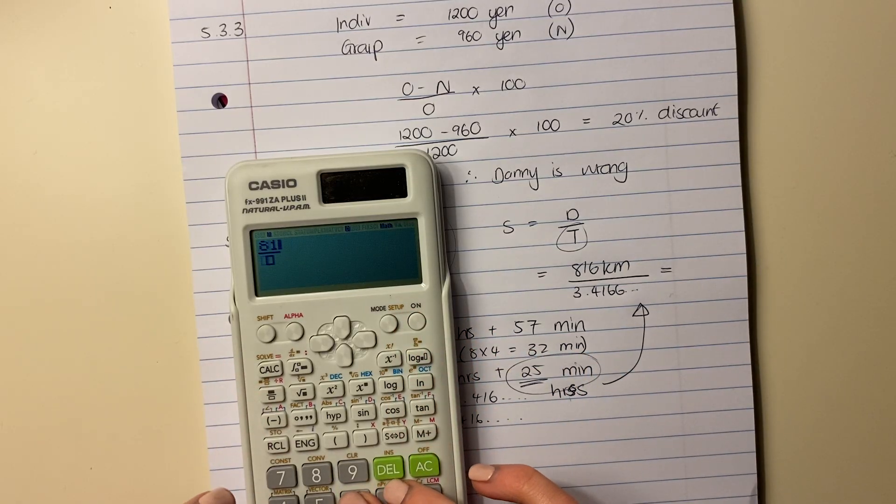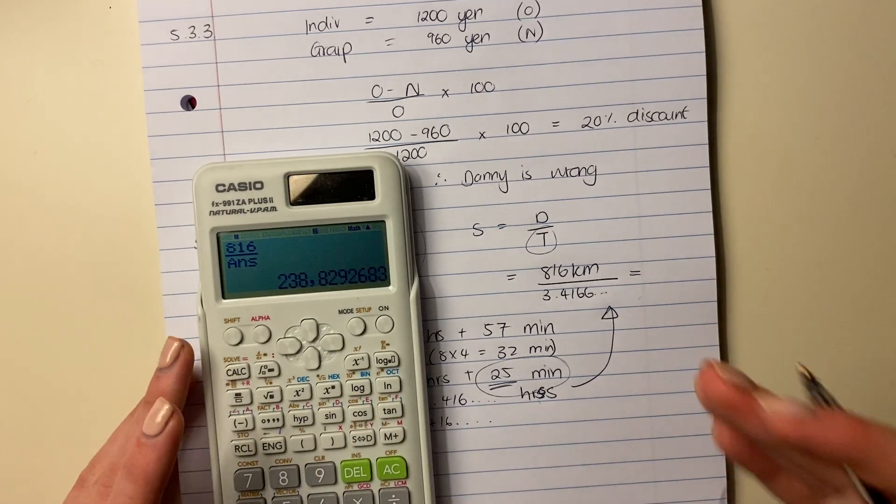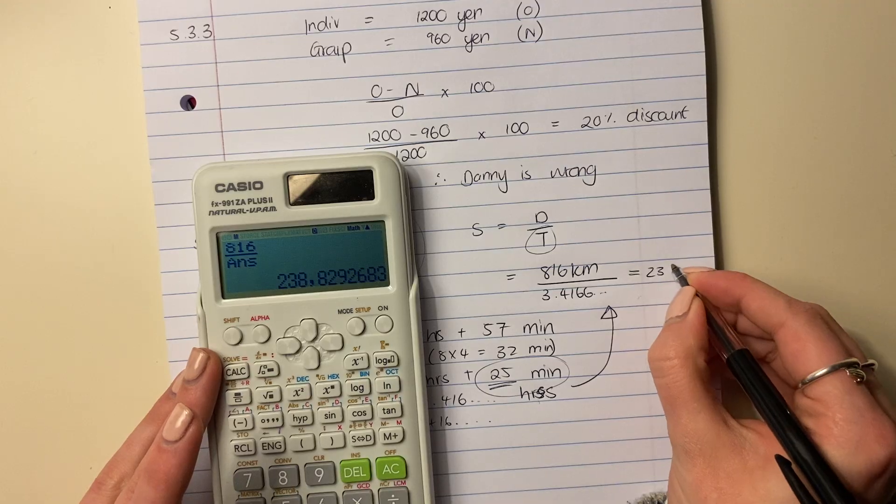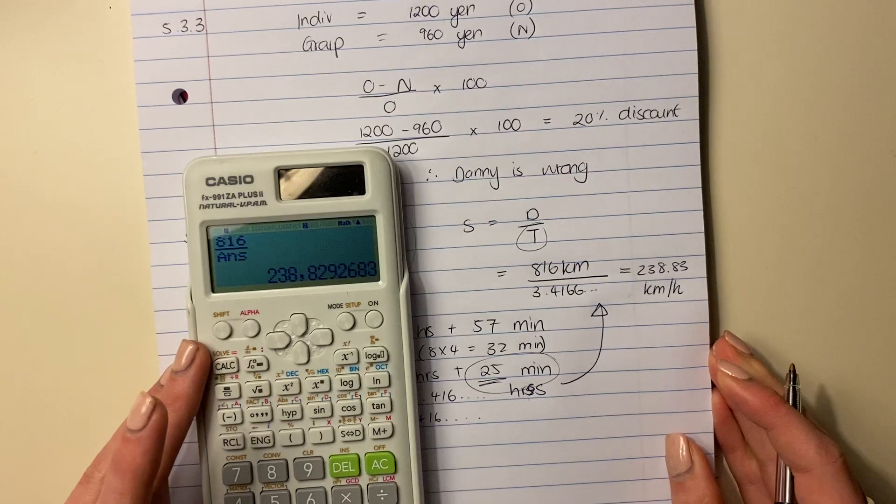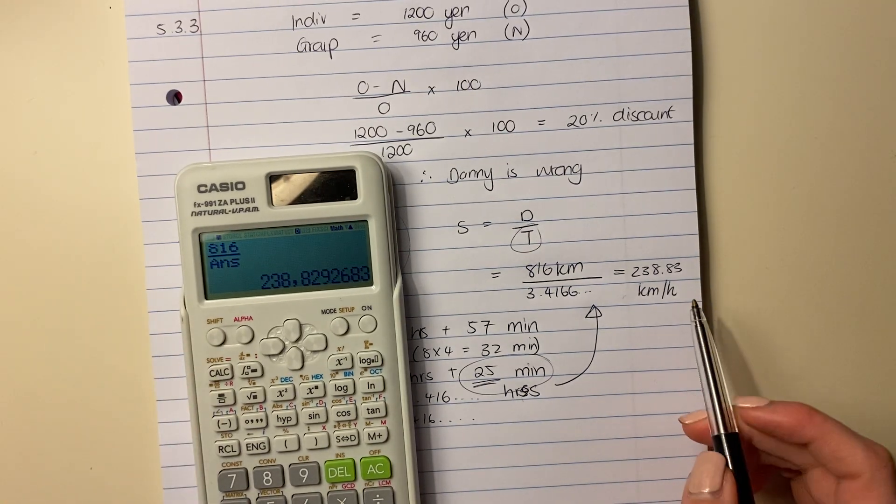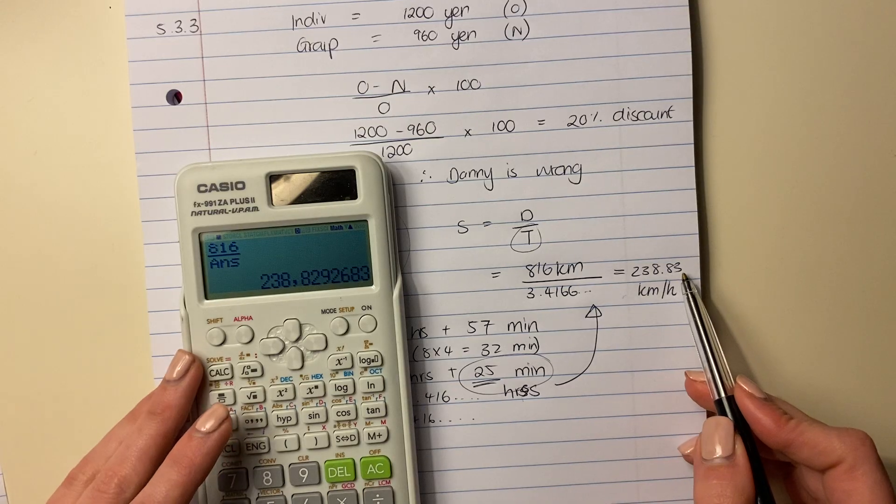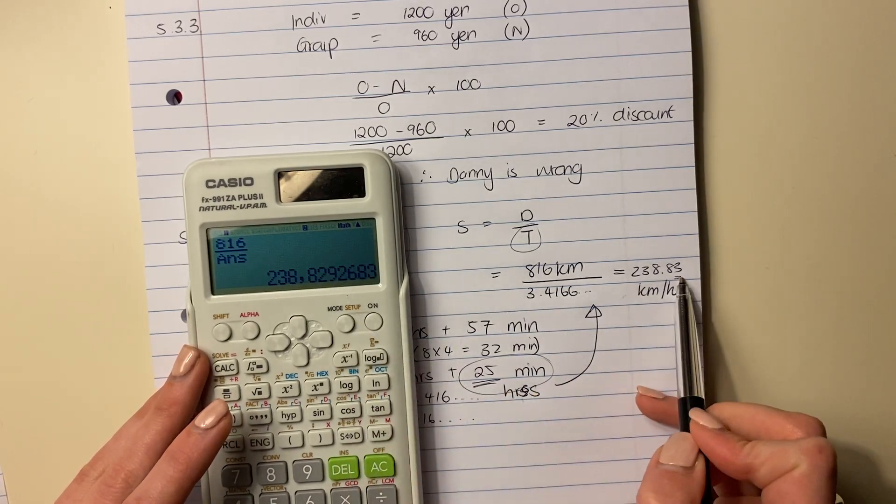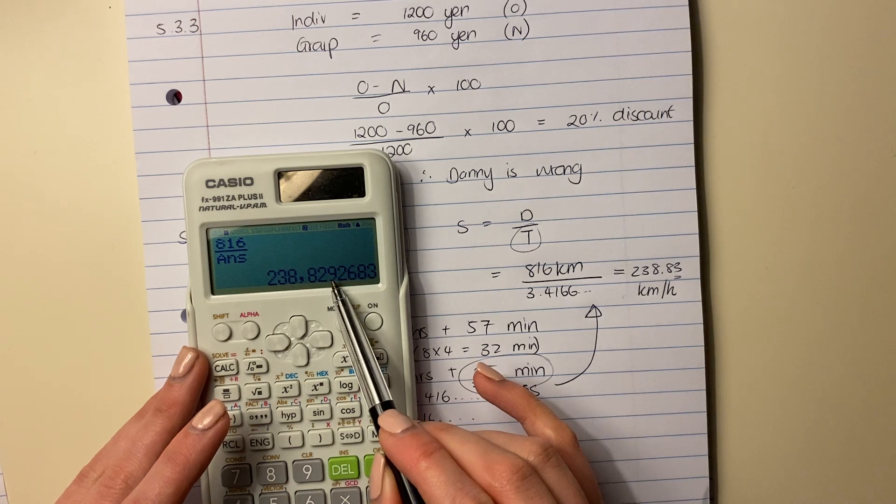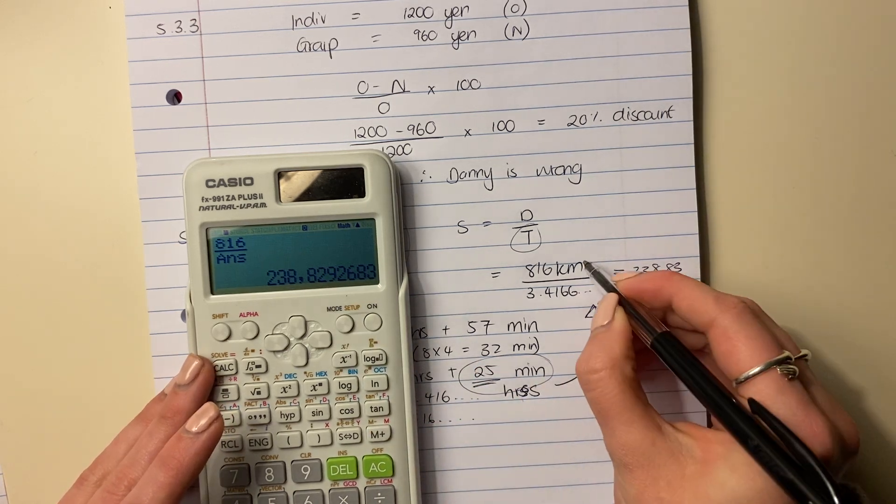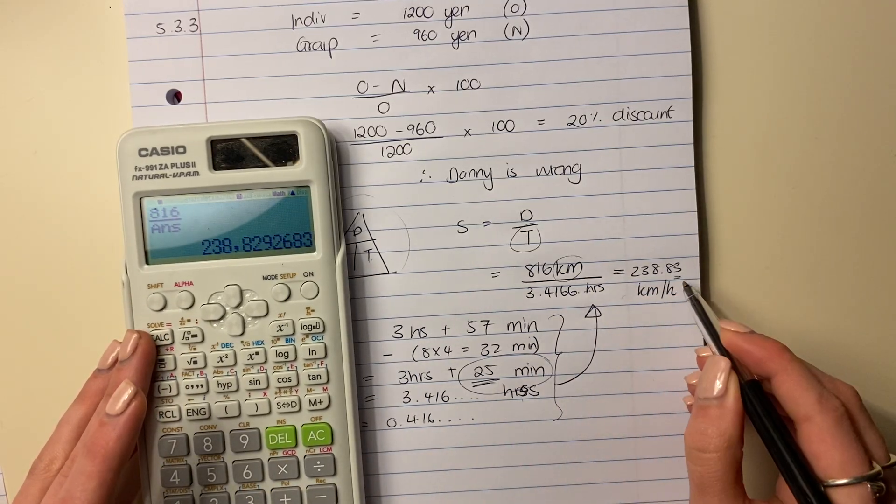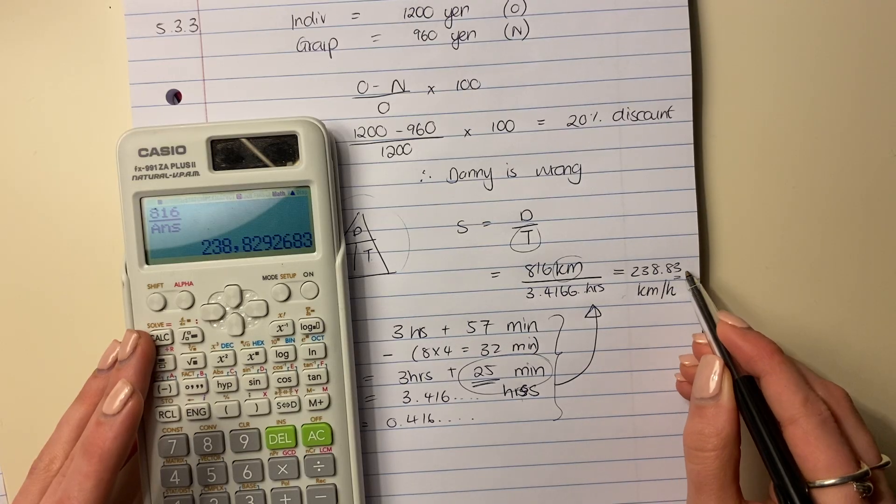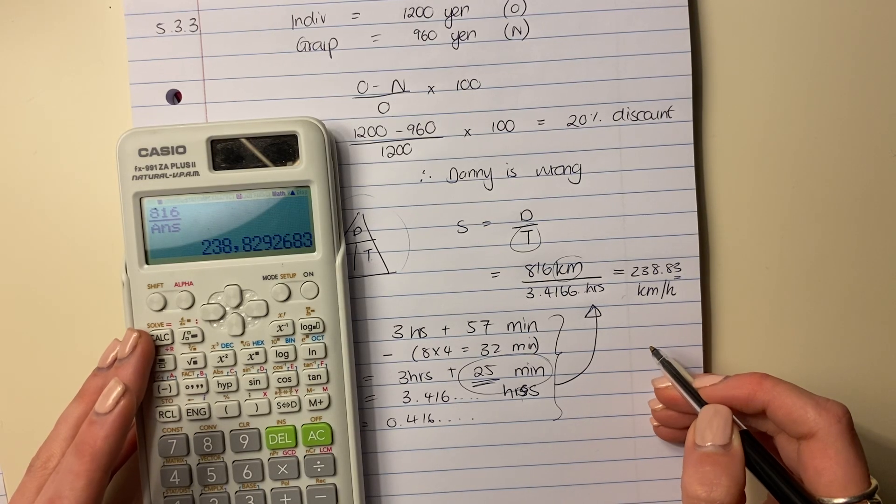And then we're going to say 816 divided by what we just got. And the average speed at which this train is moving is 238.83. Please round off. Remember, when you want to round up to two decimal places, you look at the third decimal place. Because this is above 5, you round it up and that's your answer. This is in kilometers. This was in hours. Remember, we did this whole piece of work here to convert to hours. And so our answer is 238.83 kilometers per hour. And we are done with this paper. Well done, guys.